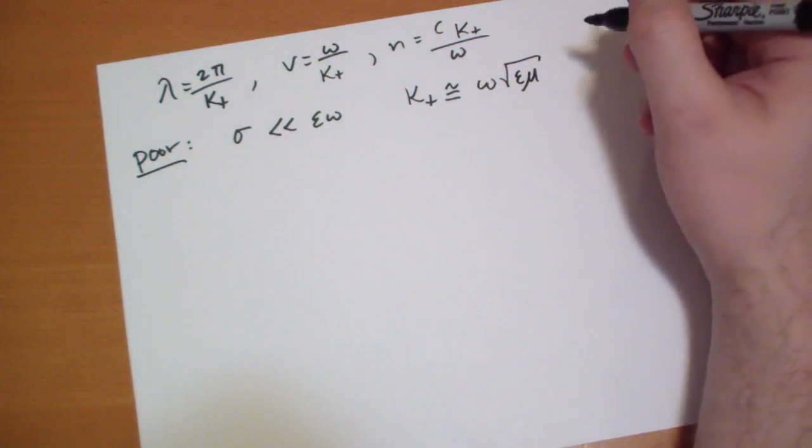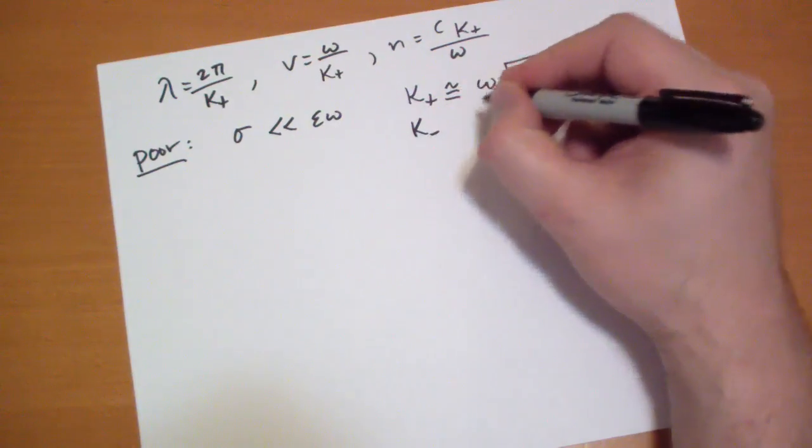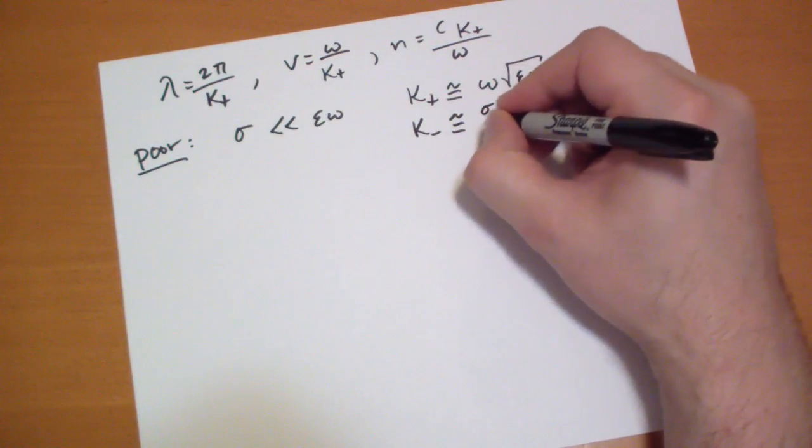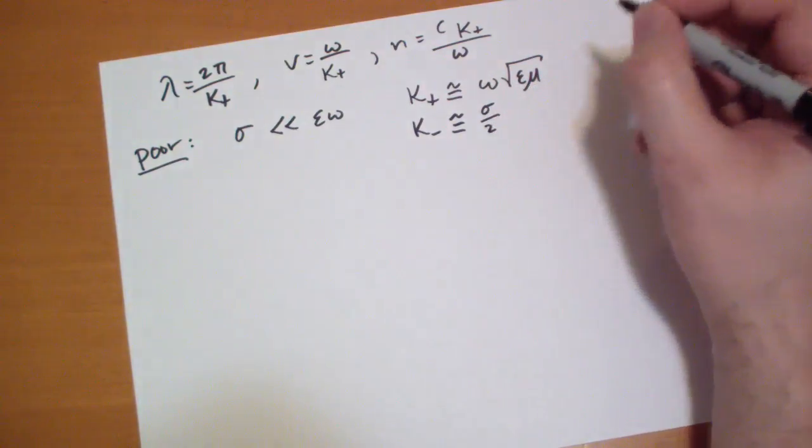For oh the kappa minus simplifies to this is the imaginary part so it's a real number square root okay.